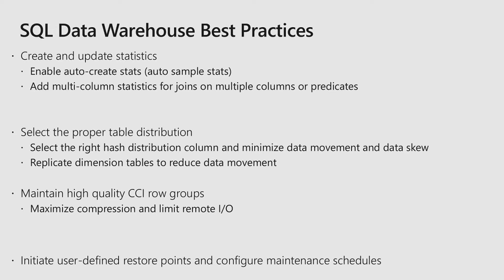Third, you want to make sure you maintain high quality CCI row groups. For SQL Data Warehouse, your large fact tables are typically clustered columnstore indexes. Your workloads are typically analytical workloads that are column-based. You want to define a CCI and ensure you have high quality row groups to maximize compression and limit remote I/O. To have high quality row groups, ensure that you provide enough memory when you load into your data warehouse, and that's dictated by your resource class and your DWU.